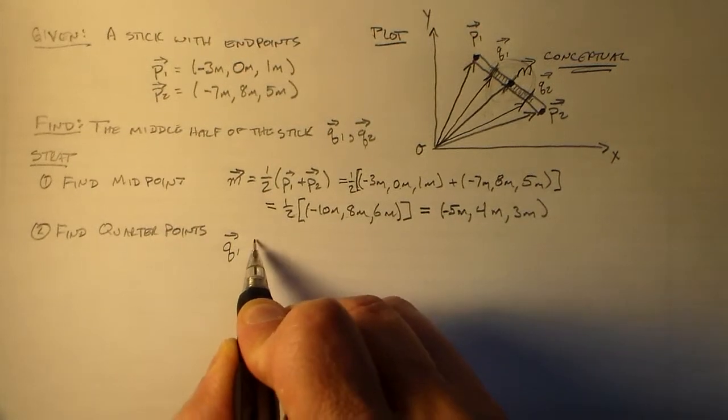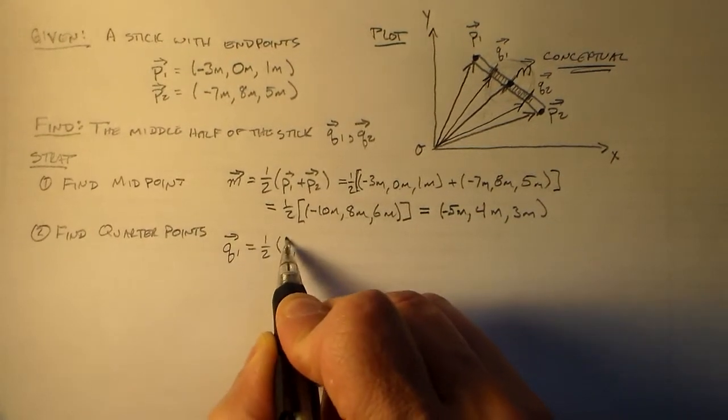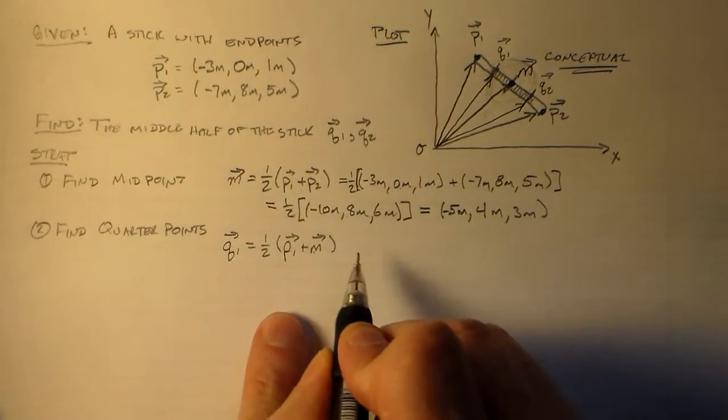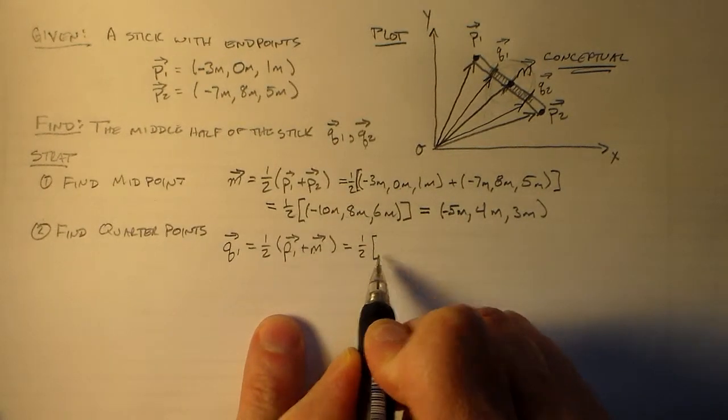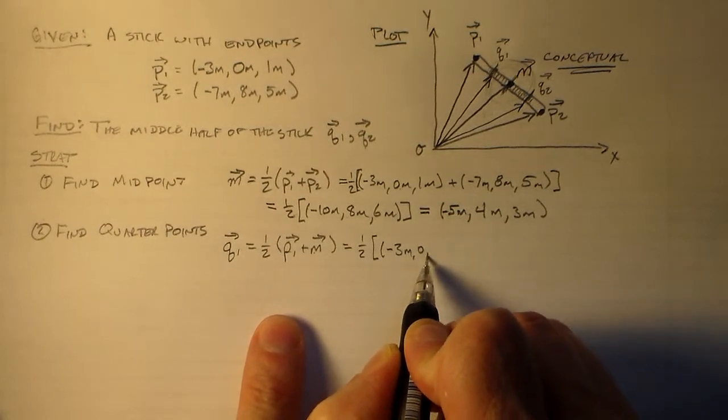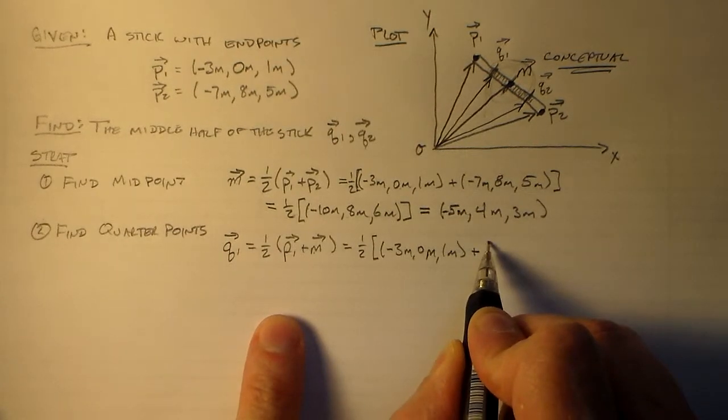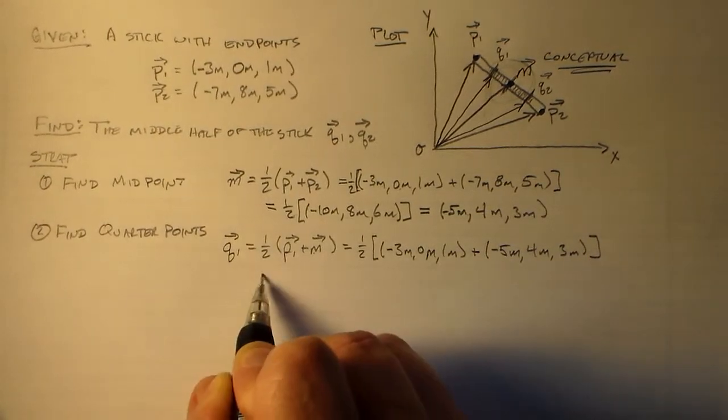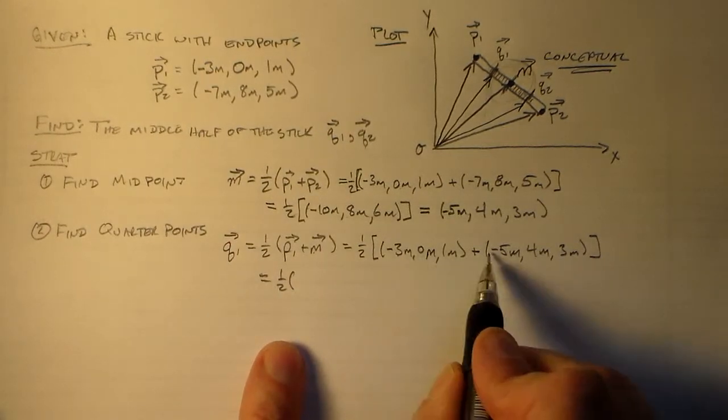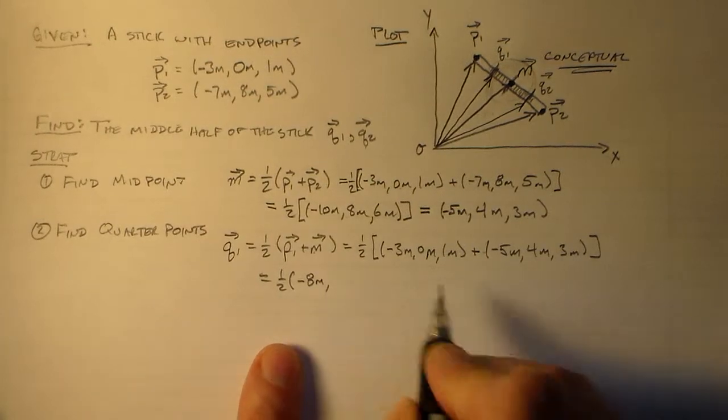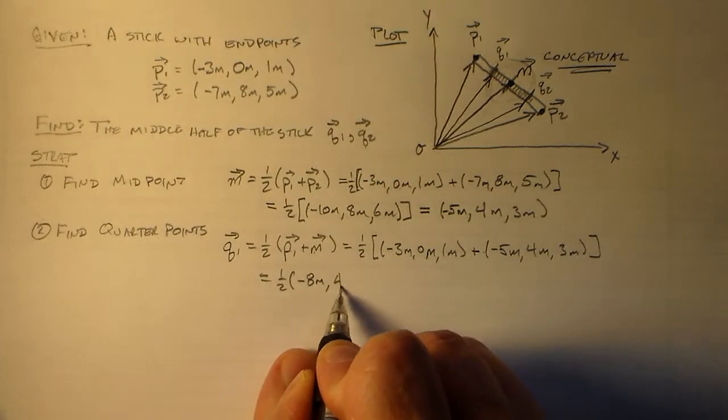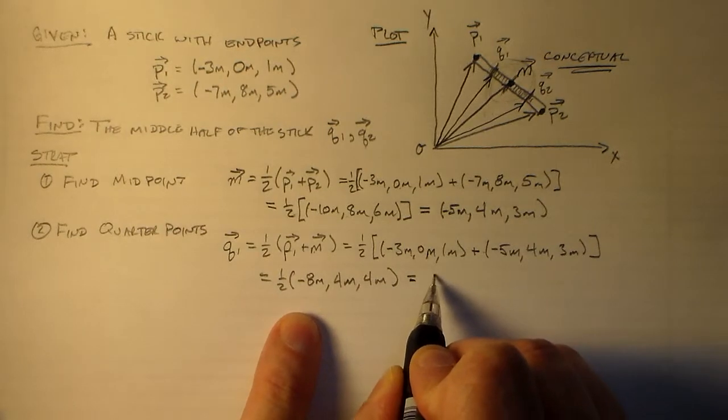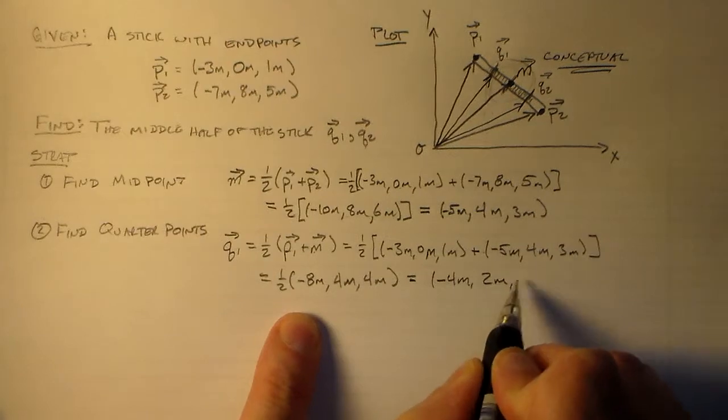All right, so the quarter points, in Q1's case, should be halfway between P1 and M. So it's the average of those two. So now we go through and we do the entire process again. Minus three meters, zero meters, one meter, plus minus five meters, four meters, three meters, which means we have half of minus eight meters, four meters, and four meters, which is equal to minus four meters, two meters, two meters. Pretty good. Not bad.